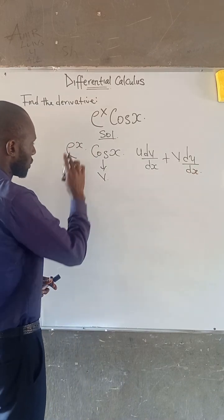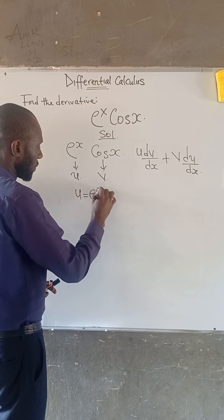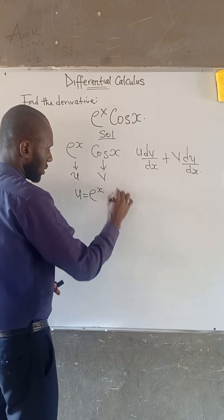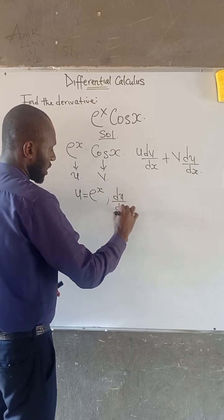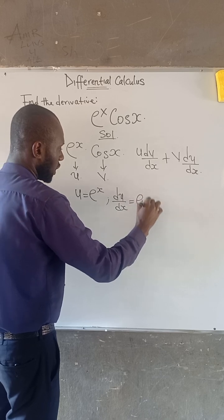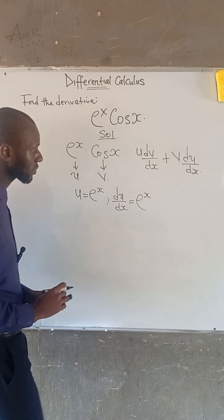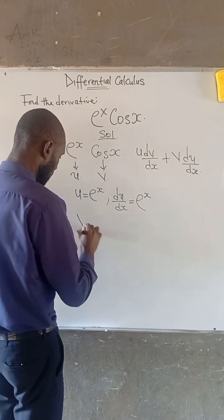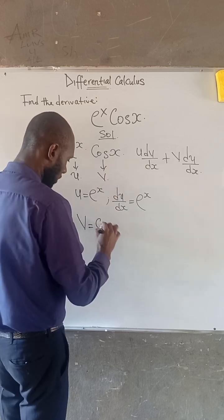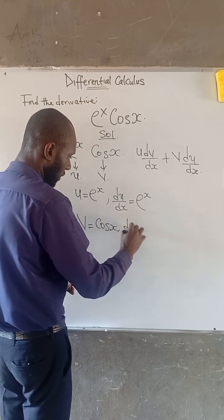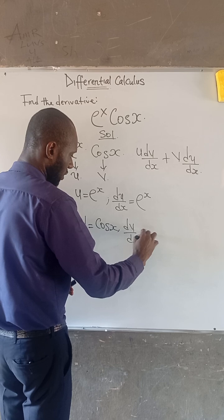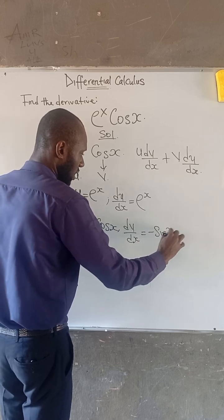Recall that u we have chosen to be e to the power of x and then du over dx is equal to e to the power of x. Also, v is equal to cos x and dv over dx is equal to minus sin x.